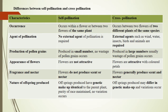Appearance of flowers: In self-pollination, flowers are not attractive; in cross-pollination, flowers are attractive with colored petals. Fragrance and nectar: In self-pollination, flowers do not produce scent or nectar; in cross-pollination, flowers generally produce scent and nectar. Nature of offspring produced: In self-pollination, offspring have genetic makeup identical to the parent plant — purity of race is maintained and no variation occurs. In cross-pollination, offspring may differ in genetic makeup and variation occurs.